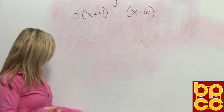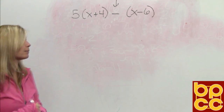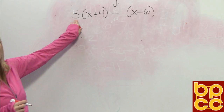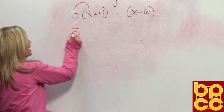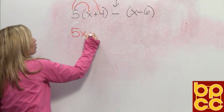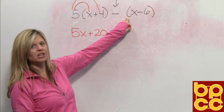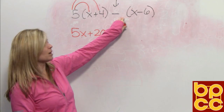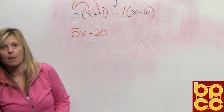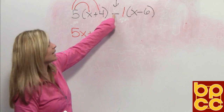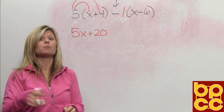Remember, parentheses in math always means to multiply. So to get rid of these parentheses, we're going to use the distributive property. In the first set of parentheses we have a 5, so we distribute a 5. 5 times x is 5x, and 5 times positive 4 is positive 20. Now we come to the second set of parentheses. In front of these parentheses I do not see a number — that is understood to be a 1. But now it's not a positive 1; that subtraction means it's a negative 1. The symbol for subtraction means a negative — they do the same job.